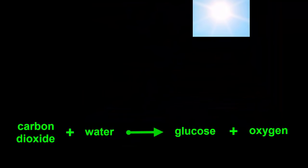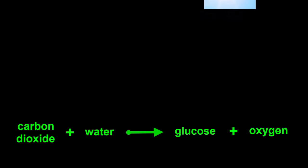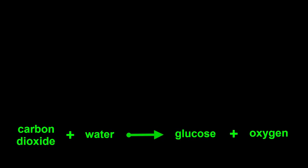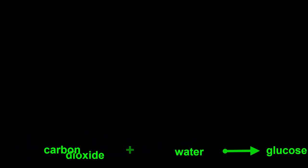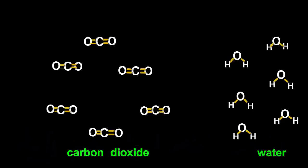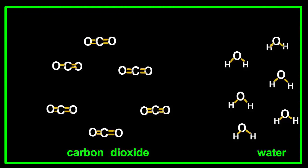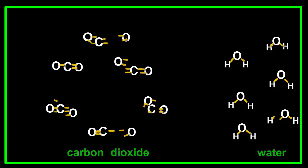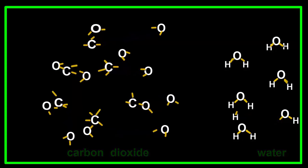This is the word equation for the reaction showing how we start with carbon dioxide, water, and sunlight energy and end up with glucose and oxygen. Here are the structural formulas showing how the carbon dioxide and water molecules are rearranged into glucose and oxygen molecules.